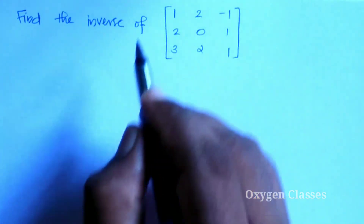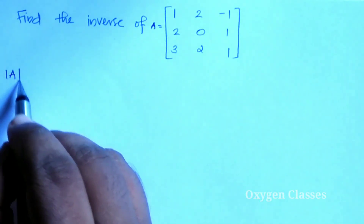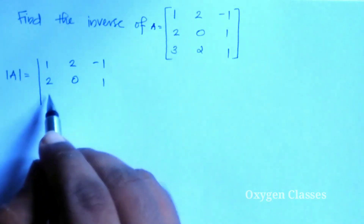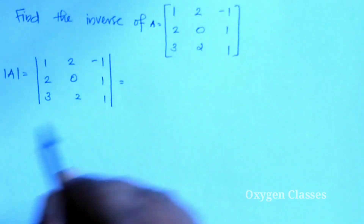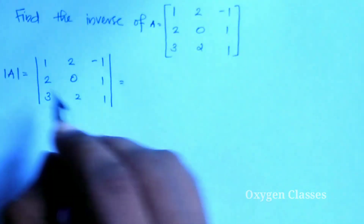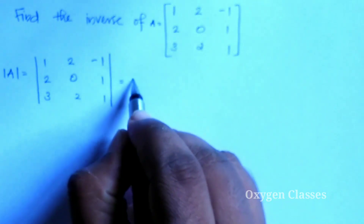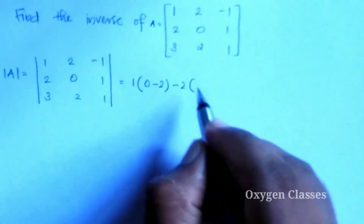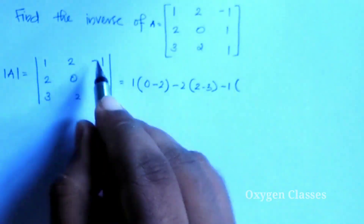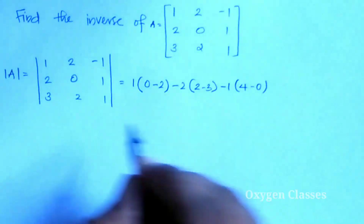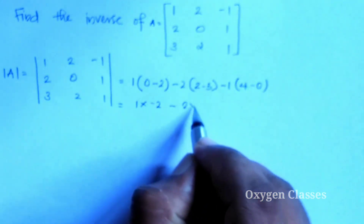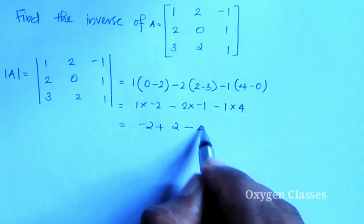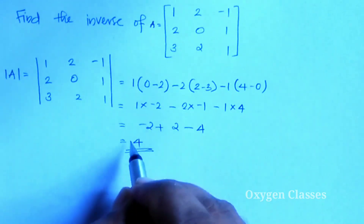Expand: 1 into (0 minus 2), minus 2 into (2 minus 3), minus 1 into (4 minus 0). This is equal to 1 into minus 2, minus 2 into minus 1, minus 1 into 4. This gives minus 2 plus 2 minus 4. The answer is minus 4.